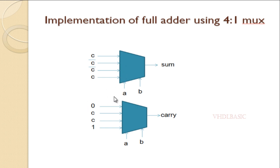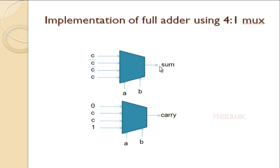As we discussed in the truth table: if both a and b are 0, then c is directly assigned to sum. If a and b are both 1, c will be directly assigned to sum. If a equals 1 and b equals 0, then c-bar will be assigned to sum. If a equals 0 and b equals 1, then c-bar will be assigned to sum. Likewise, if you see the carry: